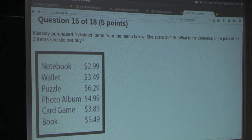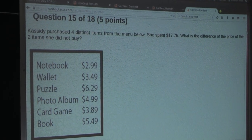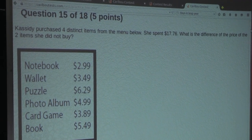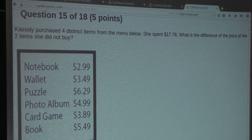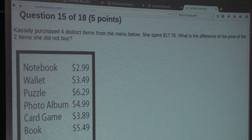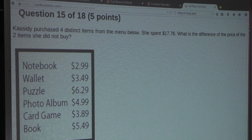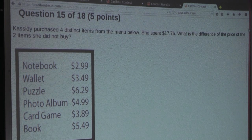So, the question is: Cassidy purchased four distinct items from the menu below. She spent $17.76. What is the difference of the price of the two items she did not buy?